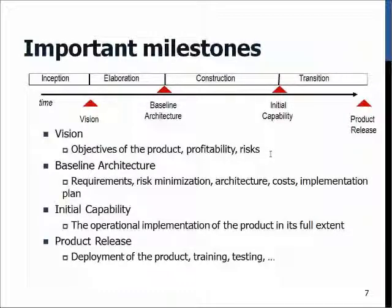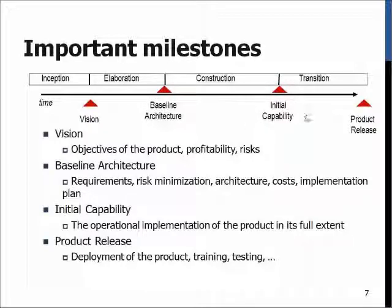Finally, considering the important milestones: the construction phase starts with the baseline architecture, which includes proof-of-concept prototypes, basic user interface test prototypes, and on paper or in diagrams all the activities and functions the system has. As we exit construction, the goal is initial capability — meaning the product is implemented to its full extent and can be put into use on the target platform, sold to customers, or we can begin finalization testing with the customers or stakeholders paying for the software development.